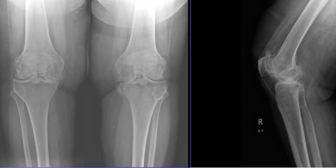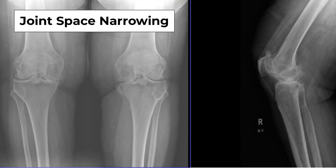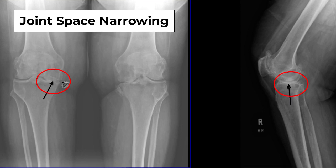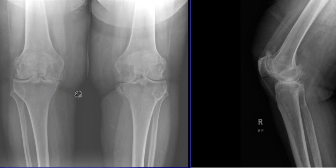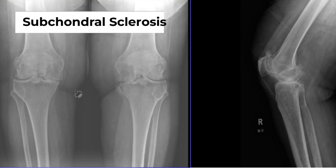We look at x-rays to determine if you may be a candidate for a knee replacement. The first thing we look for is joint space narrowing. On this x-ray you can see that there is no more joint space and that these bones are directly in contact with each other. This is what we call bone-on-bone osteoarthritis.